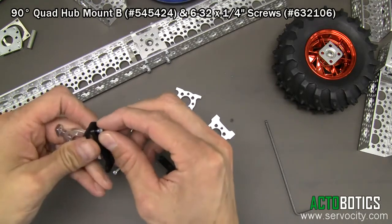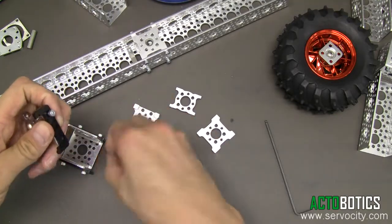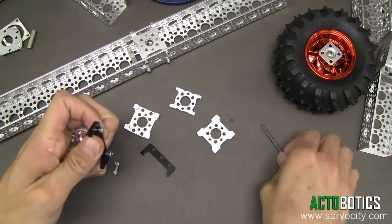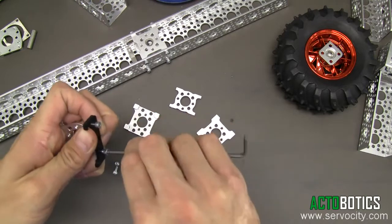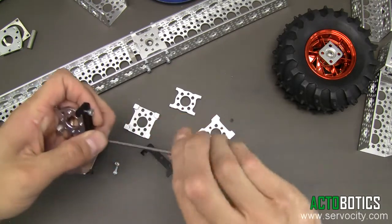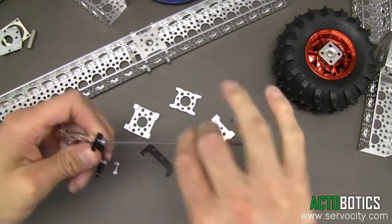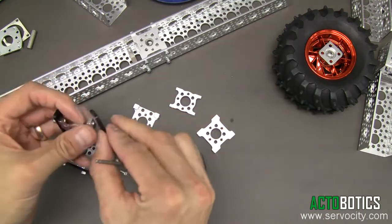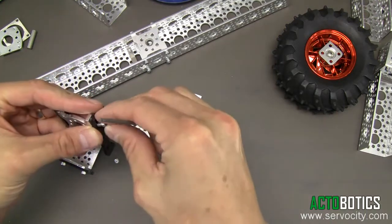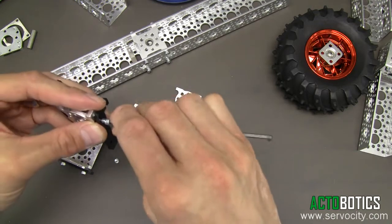These are really cool parts you can use for building everything from 3D printers to robots where you want to have one piece of channel slide along another piece of channel. Let's put these together.